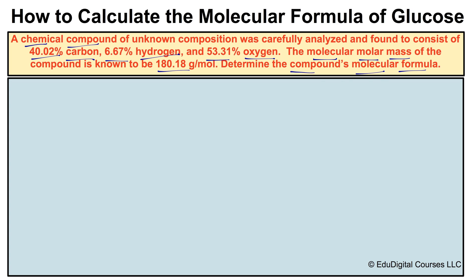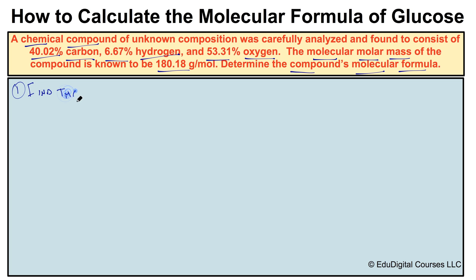In an earlier video we talked about the differences between an empirical formula and a molecular formula. The molecular formula is the actual formula of a compound showing the number of each element, whereas an empirical formula is the formula expressed in the simplest whole number ratio of atoms. We need to figure out the molecular formula when given the percent composition by mass and the molar mass.